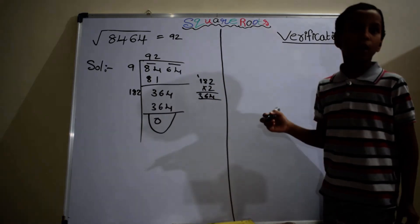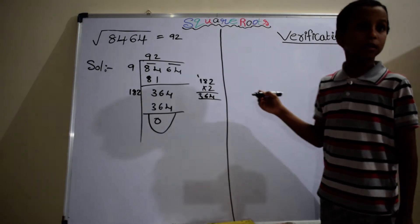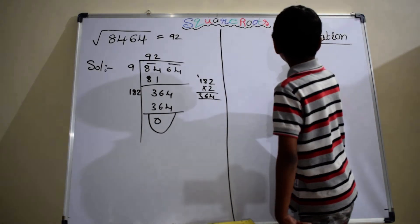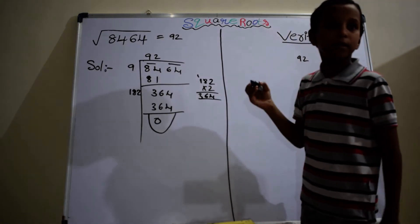Now, we are verifying whether it is correct or wrong. We have to multiply 92 by itself.